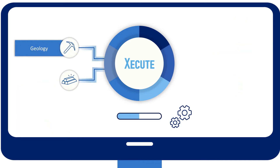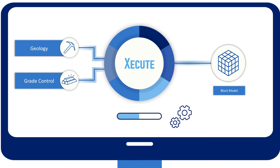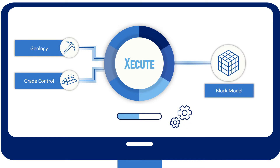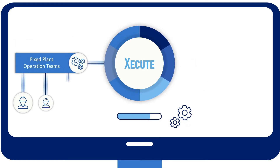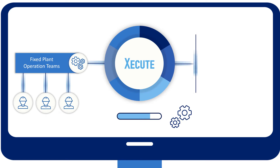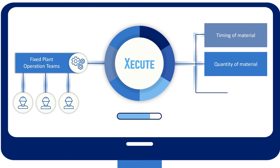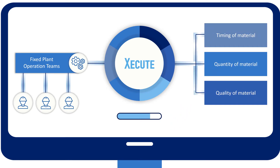Geology and grade control can update block models and can even override certain sections of the block model to reflect the latest sampling results. Fixed plant operations teams receive detailed information about the timing, quantity and qualities of material to be delivered to the plant, and can prepare accordingly.